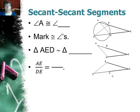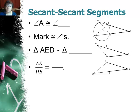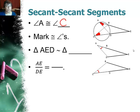Now we'll look at secant-secant segments. Before we were inside the circle; now we're moving completely outside. I've added two dotted lines to help identify triangles and their relationships. Using the intercepted arc, angles A and C are congruent. Angle E is congruent to itself by the reflexive property of congruence. Since we have two congruent angles, the triangles are similar by angle-angle similarity.